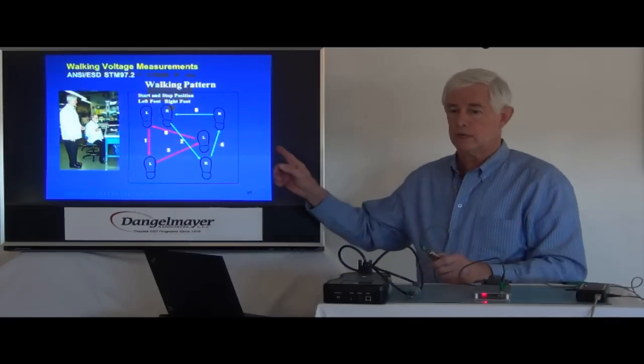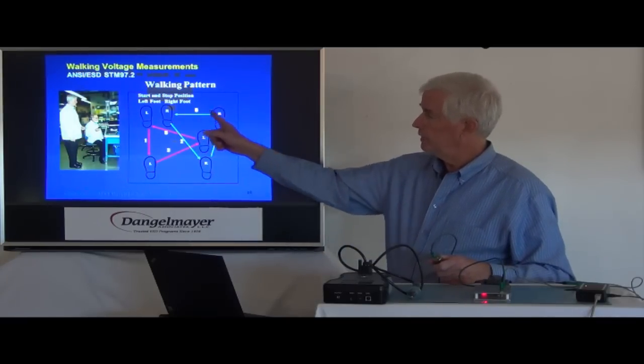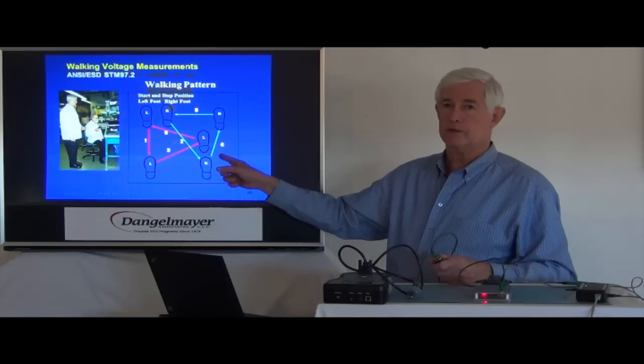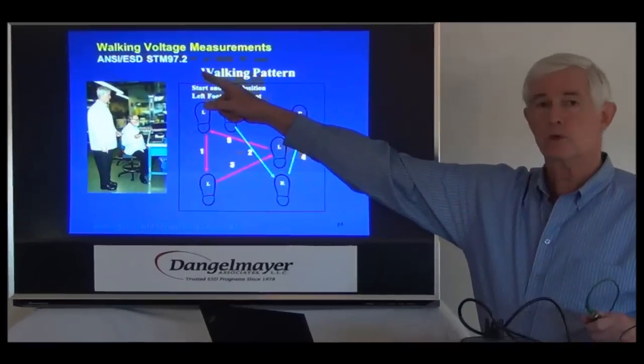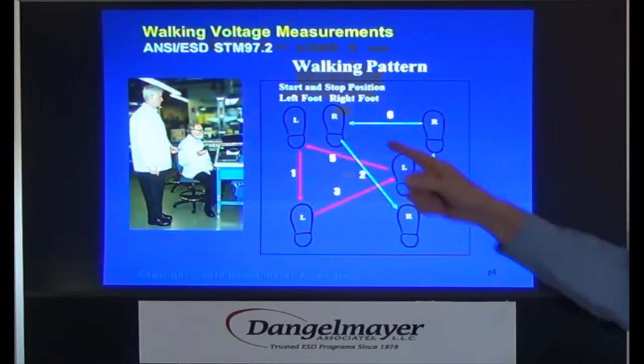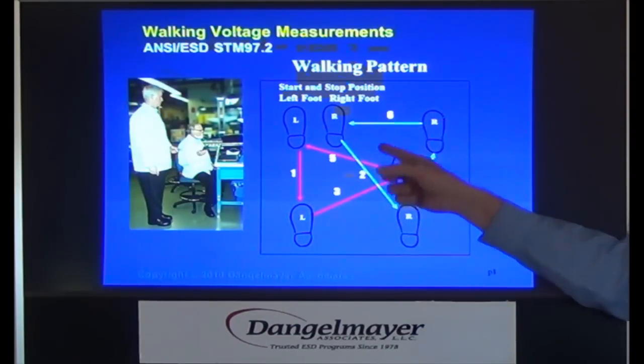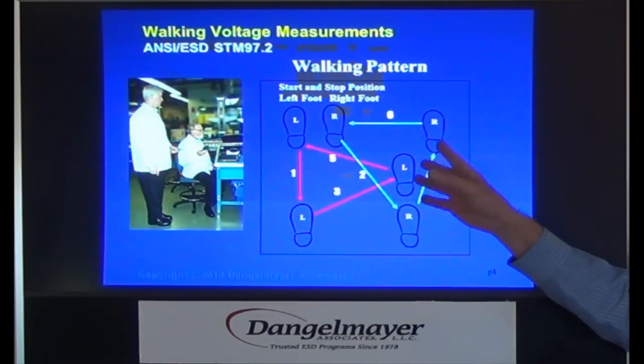If you look to my right you'll see an image of the walking pattern that is specified by the Association Standard 97.2 or STM 97.2. Basically it's like a box step where you go around in a pattern that's not too critical, but the idea is to do something that's repeatable so that you can get measurements.